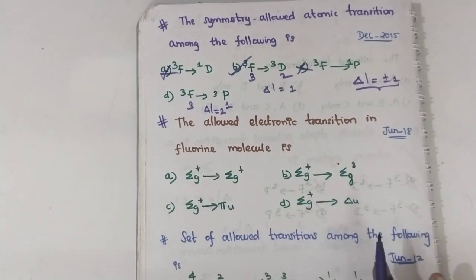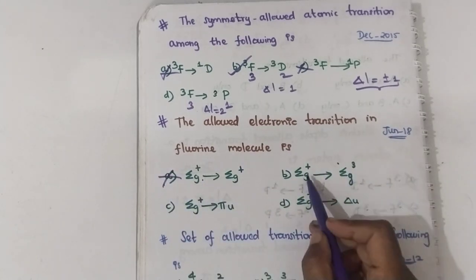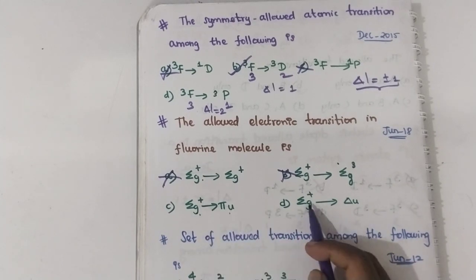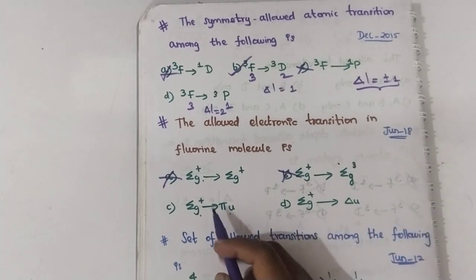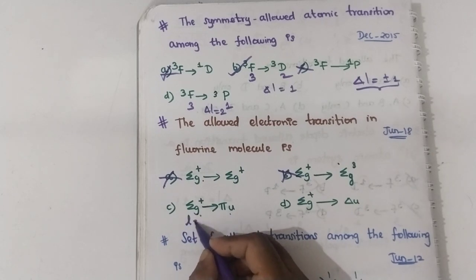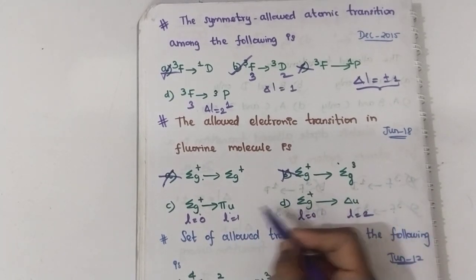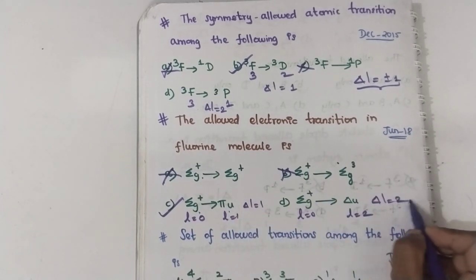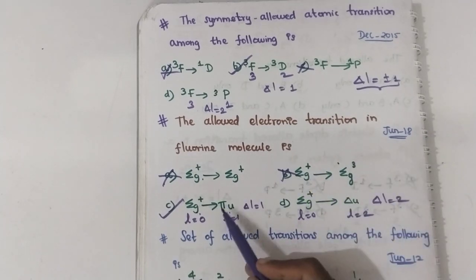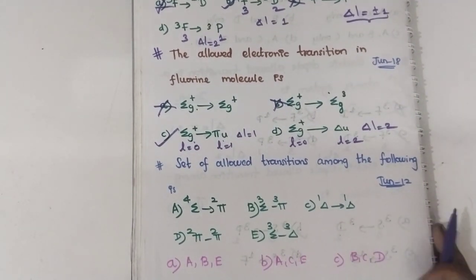For allowed electronic transitions in fluorine molecules with molecular term symbols: gerade to gerade is forbidden by the parity selection rule, so eliminate that option. The remaining options are gerade to ungerade, which is parity-allowed. Now apply Laporte: for sigma, L=0; for pi, L=1; for delta, L=2. The sigma to pi transition has ΔL=1 (allowed), while sigma to delta has ΔL=2 (forbidden). So the sigma to pi transition is allowed.